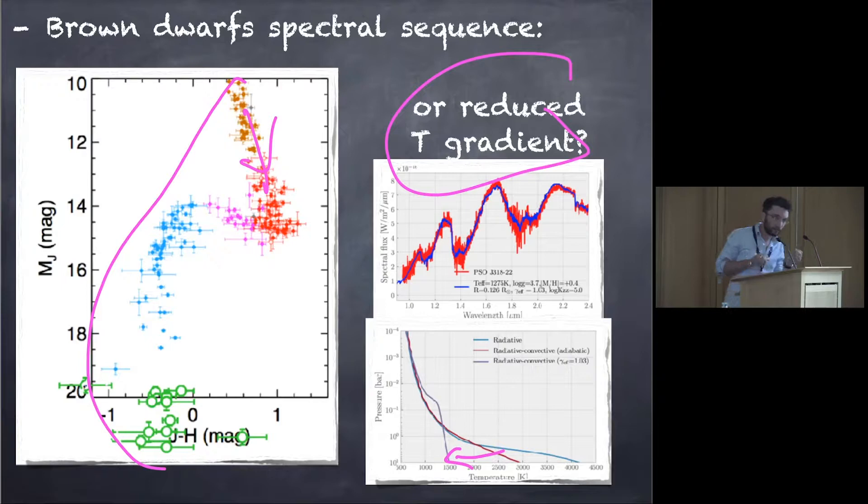One clue to the solution, I think, is actually to realize that what is truly correlated with the L-T transition? If you look at the object, all these guys here, they are CO dominated, and all these guys here, they are CH4 dominated.